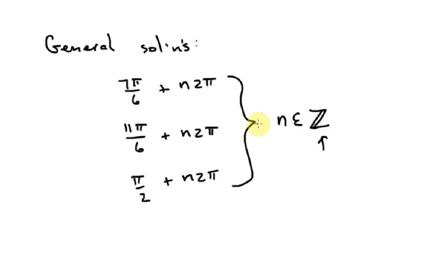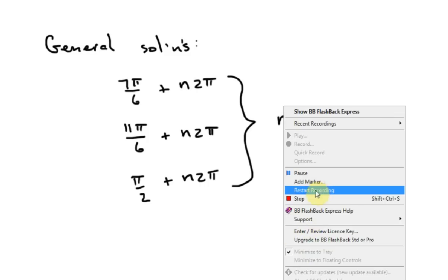And usually you see this kind of funny Z symbol here. And it actually just means that n is an element of the set of integers. So that's what that just means. It means n here has to be an integer and not just any old number, not just any old rational number. Okay, that's where I'm going to stop with this lesson.